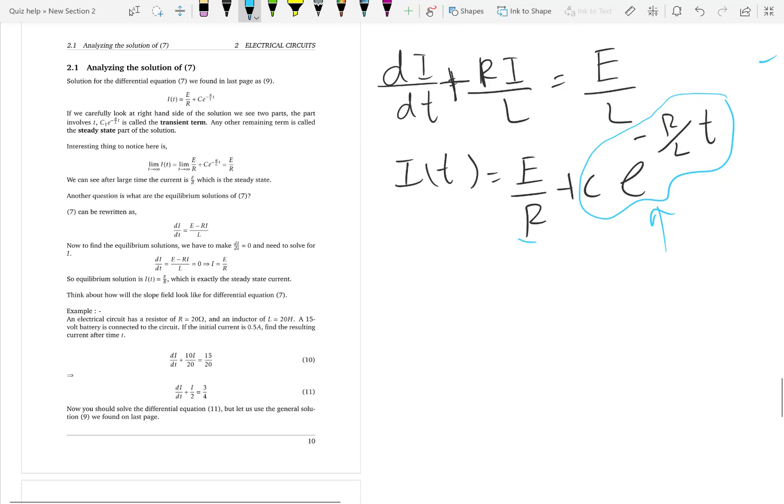Now, let us see what happens when you run this circuit for a long time. Long time means t goes to infinity. Mathematically, that is the limit when t goes to infinity of the current. How will the current look like after long time?